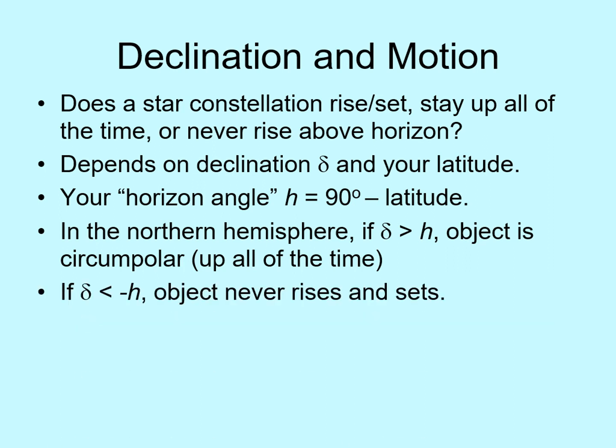Next, if the declination is less than minus the horizon angle, the star never rises. This means these stars stay below your southern horizon. If you're far to the north, then many stars will be this low. But if you're close to the equator, only a small region around the south celestial pole will stay below your horizon. Finally, if the declination is between the horizon angle and minus the horizon angle, the star rises and sets in your sky.